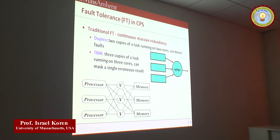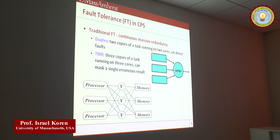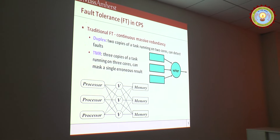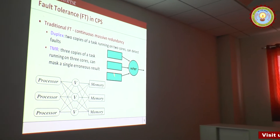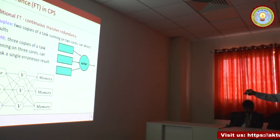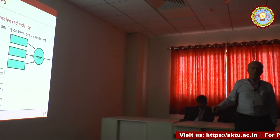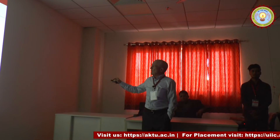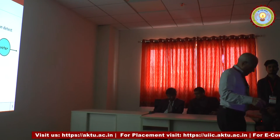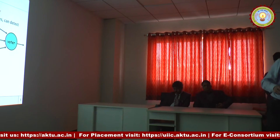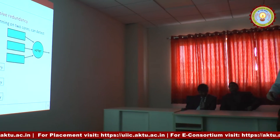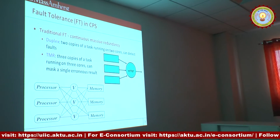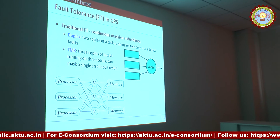The traditional techniques are duplex, where you have two copies of a task running on two cores, or triple modular redundancy, where you have three computers running the same software and then a majority voter that determines which one is correct. If two of them have identical results, you declare that the correct one, and this way you can mask a fault in the system.